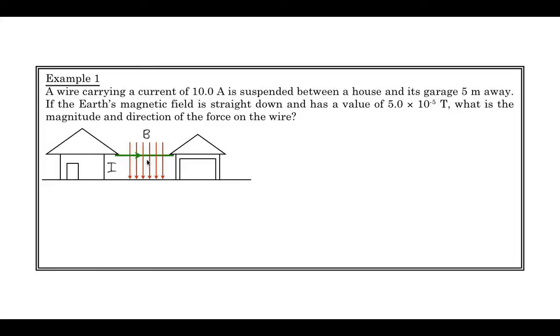The Earth's magnetic field at this point is straight downwards. It's directed straight down, and it has a value of 5.0 times 10 to the minus 5 Tesla. What is the magnitude and the direction of the force that's acting on this wire? So there's two parts of this that we need to do. We first work out the magnitude, and then we'll use a right-hand rule to figure out the direction.